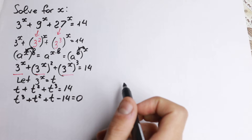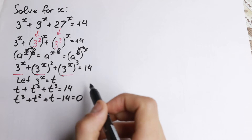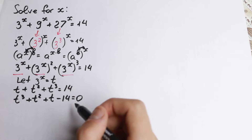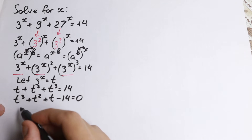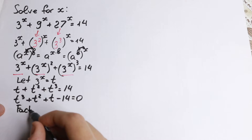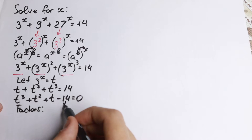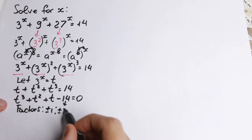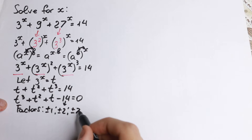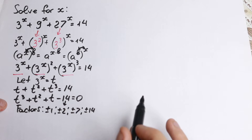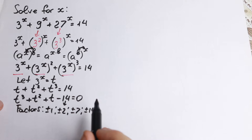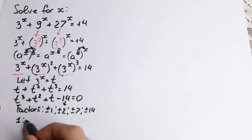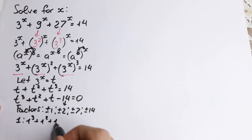There are a lot of approaches to solve cubic equations. I want to show a really interesting approach using factors. What are the factors of 14? We have plus or minus 1, plus or minus 2, plus or minus 7, and plus or minus 14 — eight factors in total. I'll start with positive ones. Let's try t equals 1: one cubed plus one squared plus one minus 14 is not equal to zero, so we reject t equals 1.